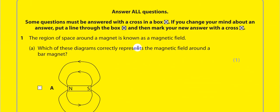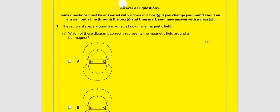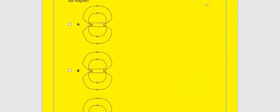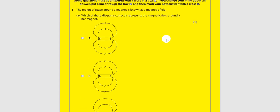Question number 1. The region of space around the magnet is known as magnetic field. Which of these diagrams correctly represents the magnetic field around the bar magnet? The magnetic field is the region up to which the force of influence of the magnet exists. Magnetic field lines are usually a way of helping us picture that field — its strength and direction.